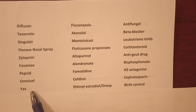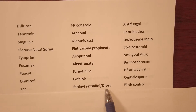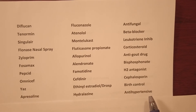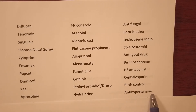Yaz, generic name — it's actually a combination of ethinyl estradiol and drospirenone — it's an oral contraceptive or birth control. Apresoline, generic name hydralazine, it's an anti-hypertensive.